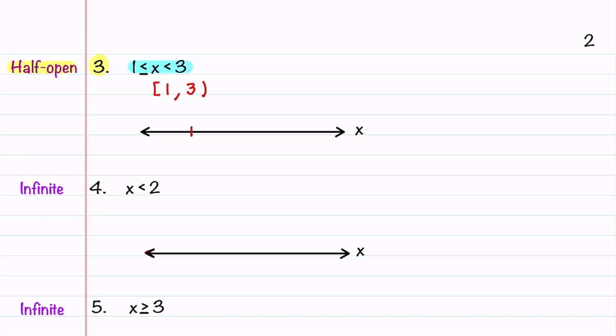Let's now put 1 and 3 on our number line. We'll put a closed circle at 1, because that's included, and an open circle at 3, because 3 is not included. And then we'll draw a line between 1 and 3, because all numbers between 1 and 3 are included.